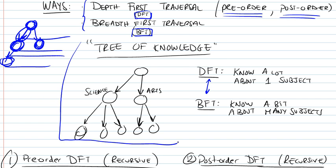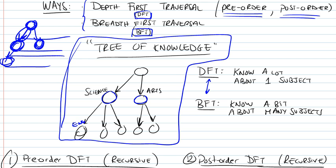I drew here what I represented as a tree of knowledge. If we assume every node represents a particular aspect of knowledge—for example, science, engineering, biology, and under arts we might have philosophy, music, and so on—then we have two approaches to going through all the nodes of this tree.